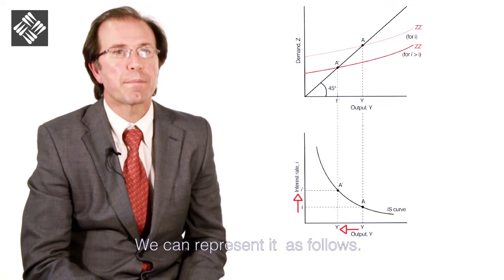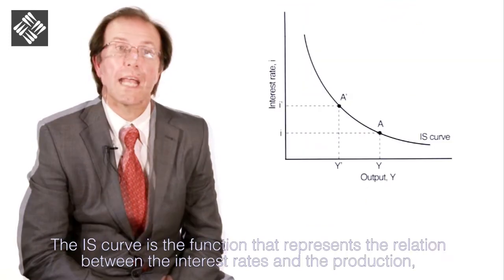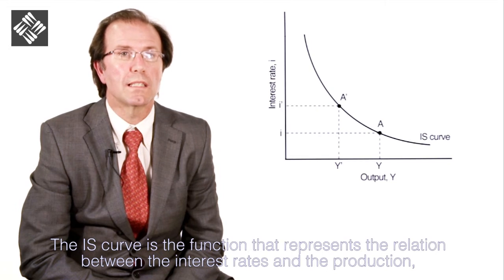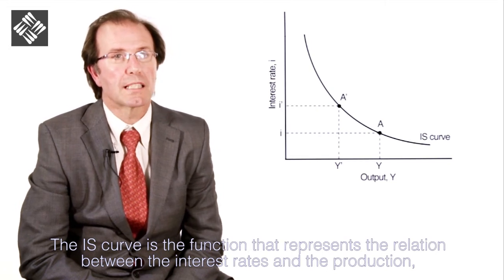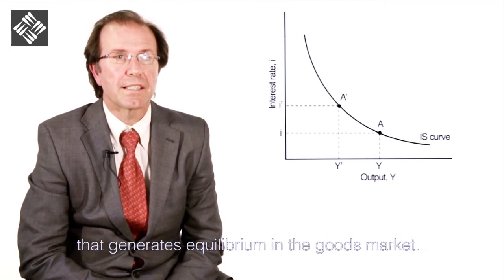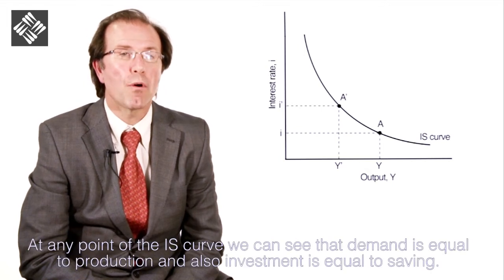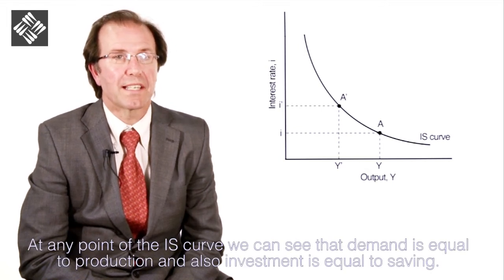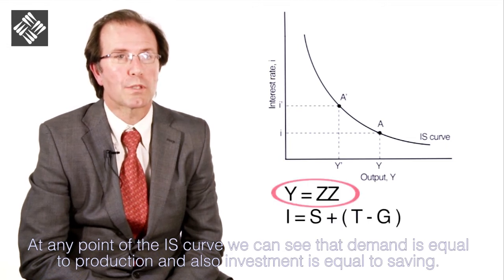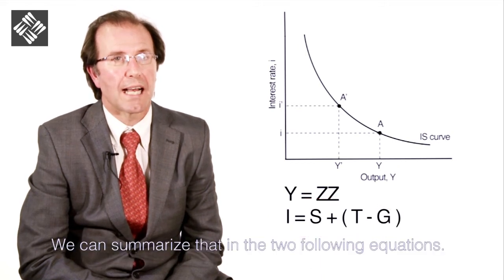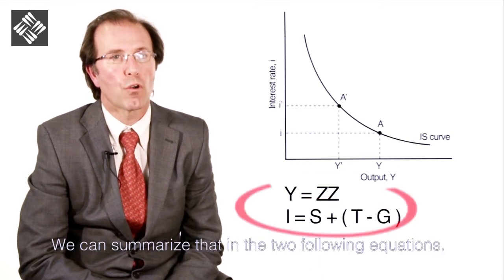We can represent it as follows. The IS curve is the function that represents the relation between interest rates and the production that generates equilibrium in the good market. At any point of the IS curve, demand is equal to production and investment is equal to saving. We can summarize that in the two following equations.